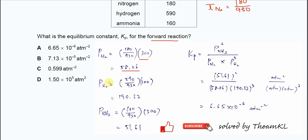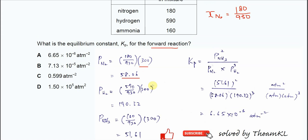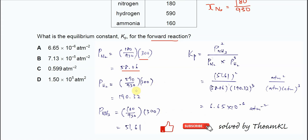For the partial pressure of hydrogen, use the same calculation method. You will get 190.32. Use the moles of hydrogen, which is 590, over total moles times total pressure to get this.